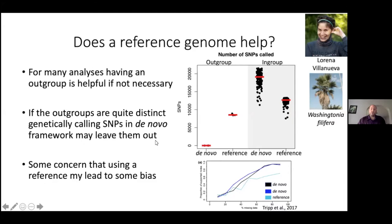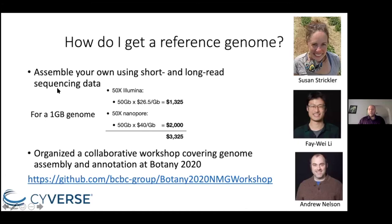How do I get a reference? This is not the focus of this webinar, but with Susie Strickler and some colleagues, we produced a workshop on genome assembly and annotation for non-model species. One baseline: for an organism with about a one-gigabyte genome, it would cost around a little over $3,000 US dollars to generate a genome assembly good enough to help you call SNPs. All the references and information for this are found on the GitHub page, which we can also provide a link to afterwards.